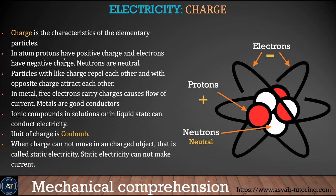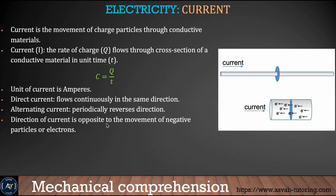Now we'll learn electricity. The first concept is charge — the characteristic of elementary particles. In atoms, protons have positive charge, electrons have negative charge, and neutrons have no charge. The unit of charge is the coulomb. Current is the flow of electrons, defined as Q over T, and its unit is the ampere. There are two types of current: direct current (DC) and alternating current (AC).